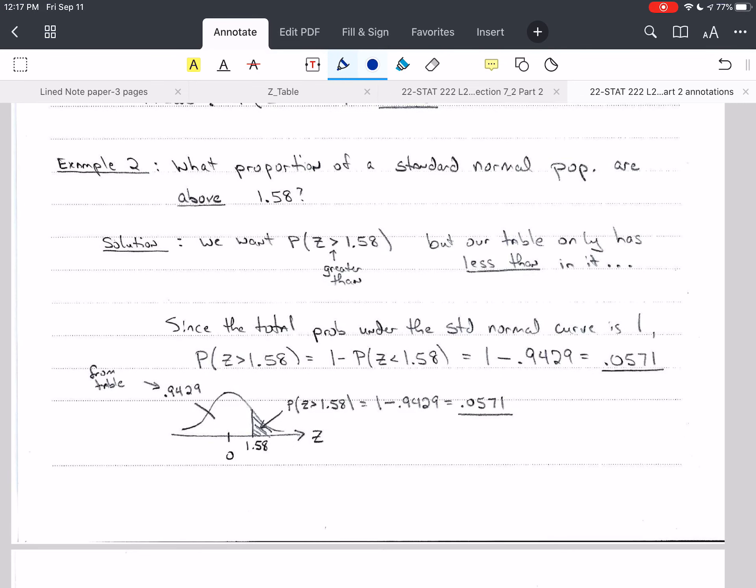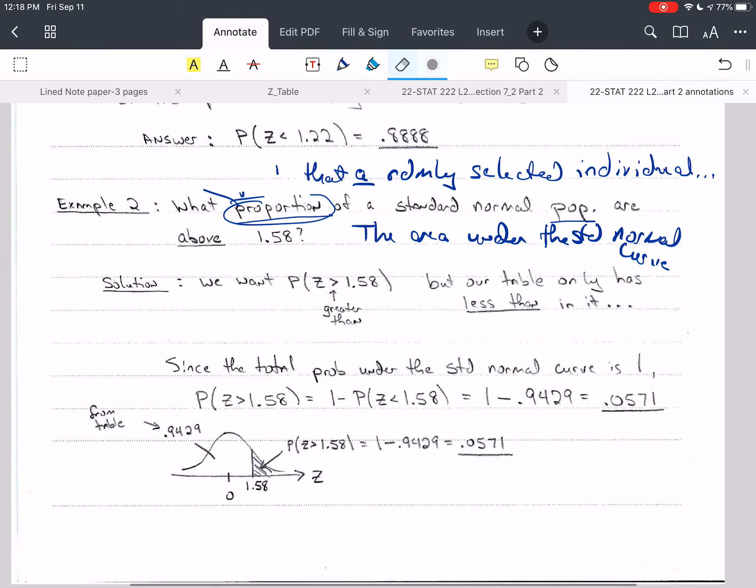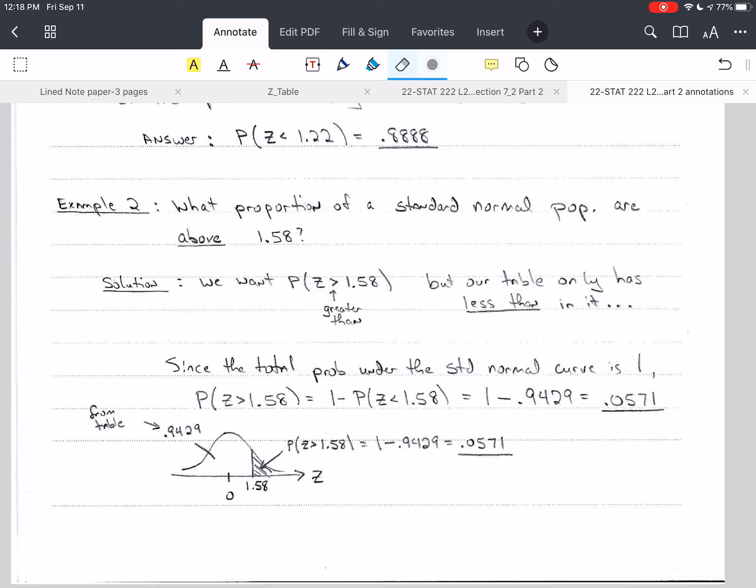And remember that there are several different ways we can ask the same question in this section. What proportion of a population? What's the probability that a randomly selected individual? What proportion of the population? What's the area under the standard normal curve? Instead of proportion, we could ask percentage. So those are all ways that we could ask for the same value, the same answer. So we're going to use each of those and make sure that you see how you do this, but the way you ask the question can be any of those ways.